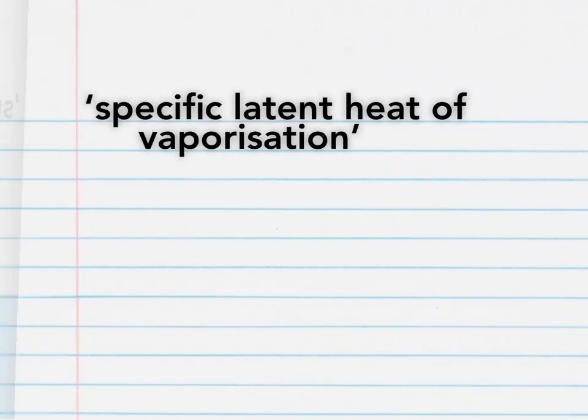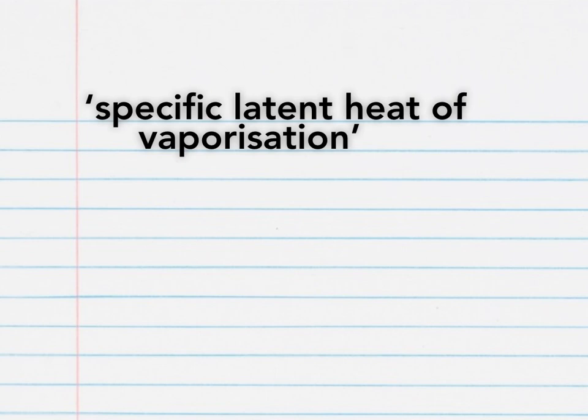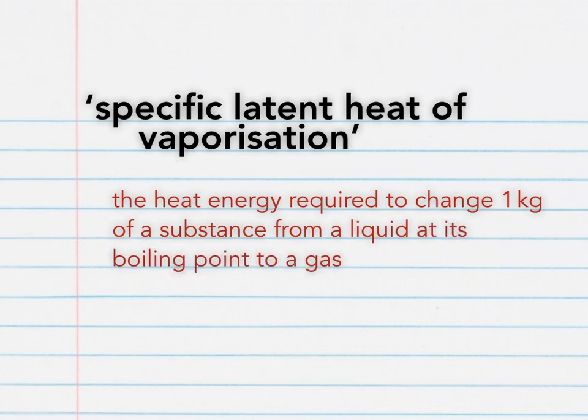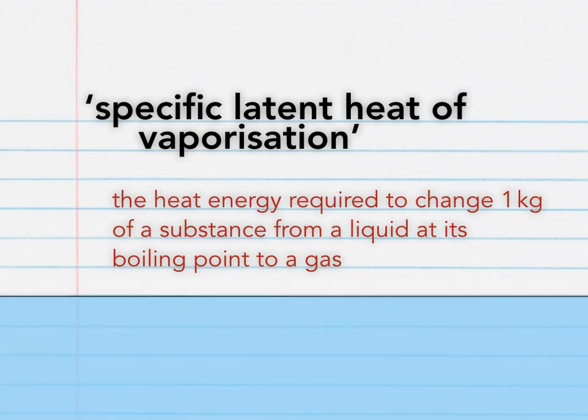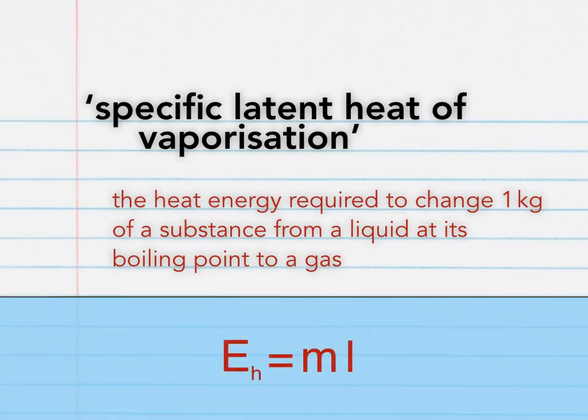Here's the next one. Specific latent heat of vaporization. This is again related to heating a substance, although since the substance is at its boiling point, it results in a change of state. The specific latent heat of vaporization is the heat energy required to change one kilogram of a substance from a liquid at its boiling point to a gas. This equation should help you work out the definition as long as you remember the change of state. To make specific latent heat of vaporization L the subject, divide both sides by M, where EH is heat energy and M is mass in kilograms.